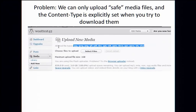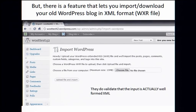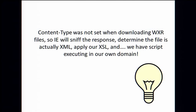One thing we can do in WordPress is upload safe media files — files like JPEG or PNG — and these files can look like anything we want. Even though they are JPEG files they can look like binaries or they can look like XSL. It turns out the content type is explicitly set, so if we upload script alert(1) we can't just request it because the content type is set to an image. But we can upload an XSL file. There's another feature in WordPress that lets you import and download your old WordPress blog in XML format — a WXR file. With this, the content type is actually not set, so we might get script with this. They do validate that the input is well-formed XML, so there's another hurdle.